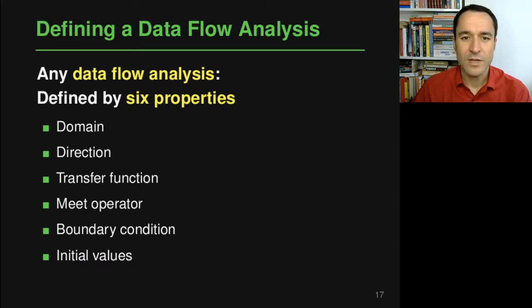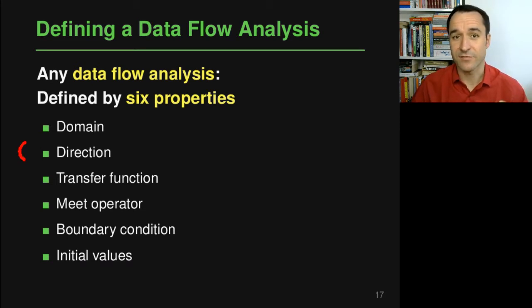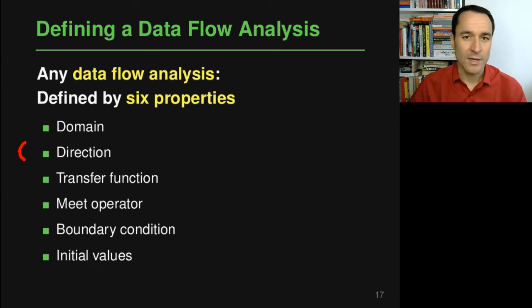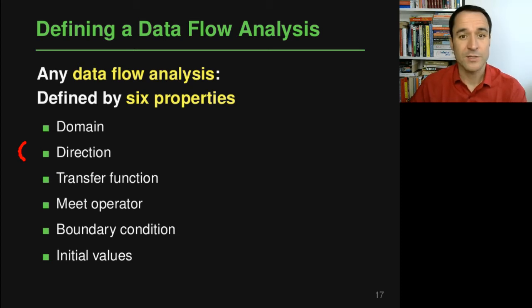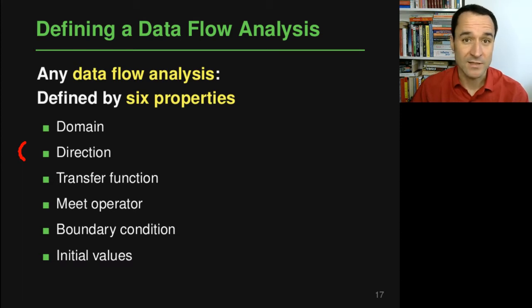Every data flow analysis has a direction, which basically tells us whether it's a forward or a backward analysis — whether it reasons about the code in the order in which statements are actually executed, or reasons about the code backwards, which for some analysis problems makes more sense than a forward reasoning.